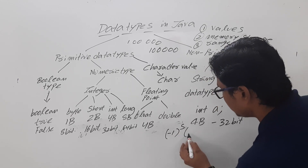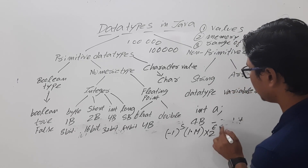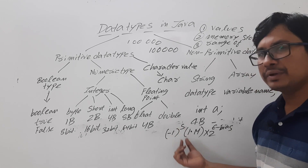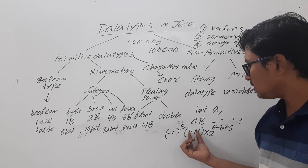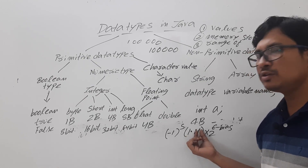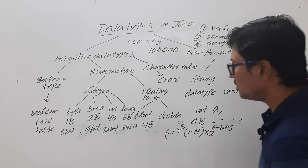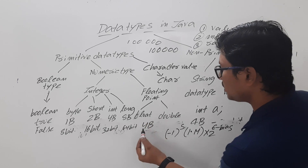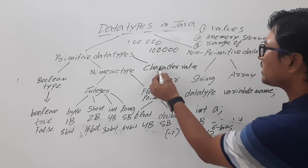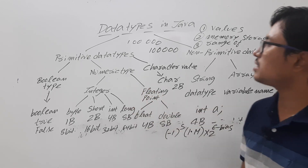Floating point numbers are represented in the form of minus one to the power s times one dot m (where m is the mantissa) times two to the power exponent minus bias — this is the implicit form. The explicit form uses zero dot m. Float occupies four bytes, double occupies eight bytes, and character holds one character which occupies two bytes. This covers the primitive data types.